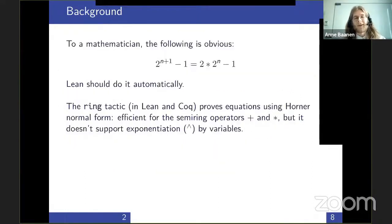In this specific case, a mathematician came to us and said the following equation: 2^(n+1) - 1 is just the same as 2 × 2^n - 1. To a mathematician, this is trivial, this should be obvious, and so Lean should do it automatically.